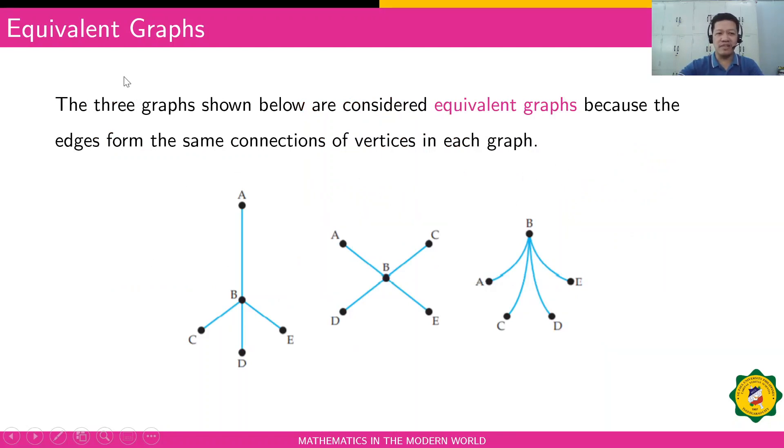There's also what we call equivalent graphs. These three graphs that you can see here are actually equivalent. Why are they equivalent? Because they have the same number of vertices and the same number of edges, and how these vertices are connected are the same. As you can see here, A is connected to B. You can see in the second graph that A is also connected to B. And you'll notice in the first graph that vertex B is connected to all other vertices. It's actually the connection that matters, or how they are related to each other. This is what we call equivalent graphs.